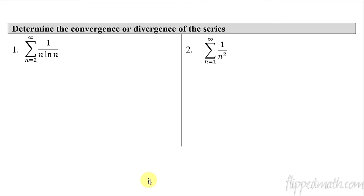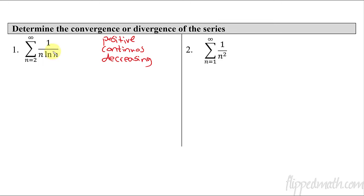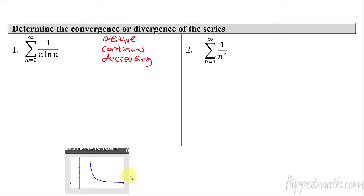Now let's do a couple of quick examples and you'll see how easy this really is. You might have to apply different skill sets for integrating various things. Before we do that, we have to check the three conditions: is it positive? Is it continuous? And is it decreasing? If you're not sure, grab the graph on your calculator to verify. Here I pulled up the graph — yes, it is positive, decreasing, and continuous.